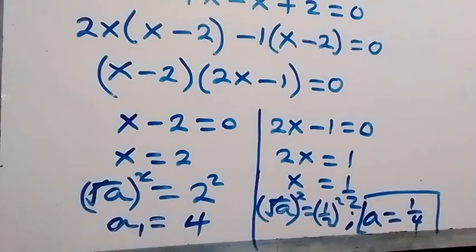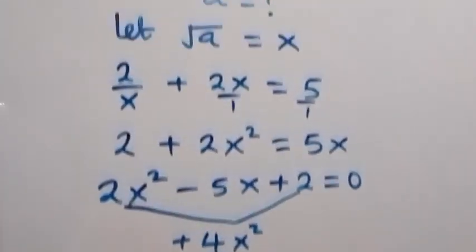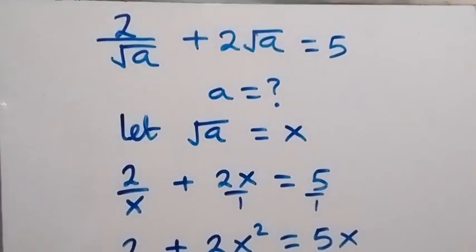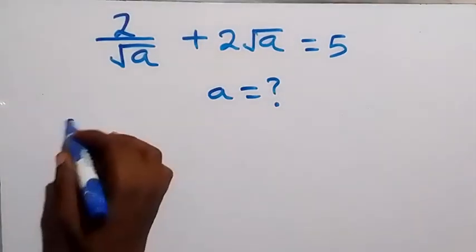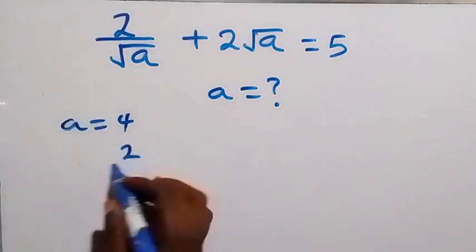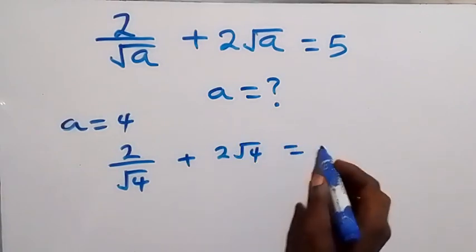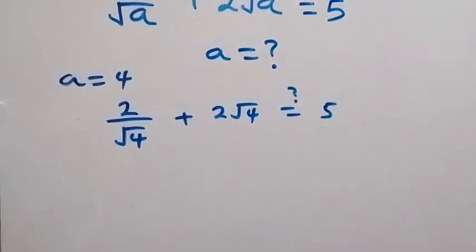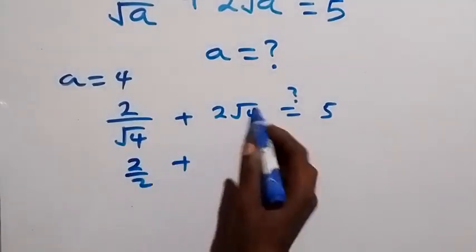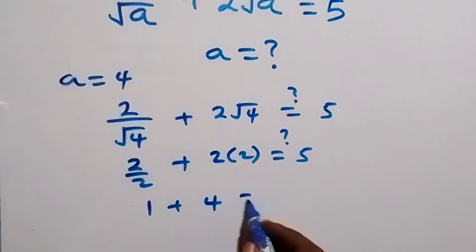We verify a equals 4 in the original equation: 2 over root 4 plus 2 times root 4 equals 5. This gives 2 over 2 plus 2 times 2, which is 1 plus 4, and that equals 5. Confirmed.